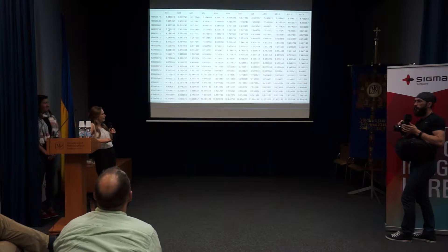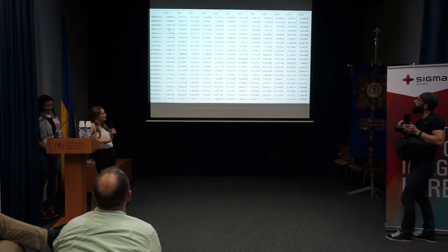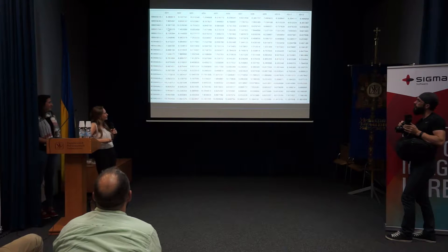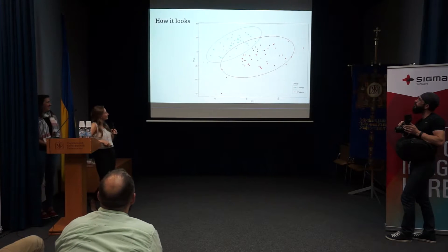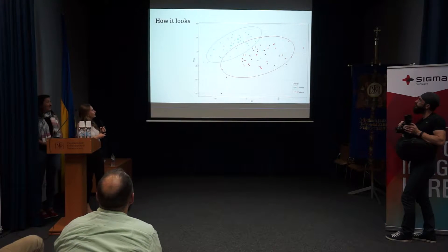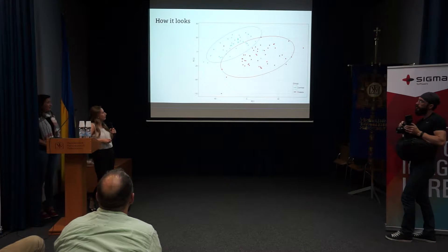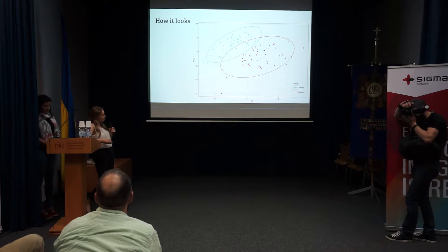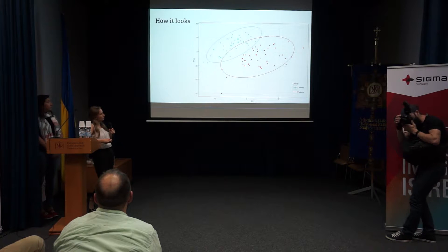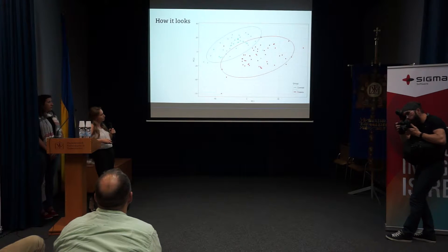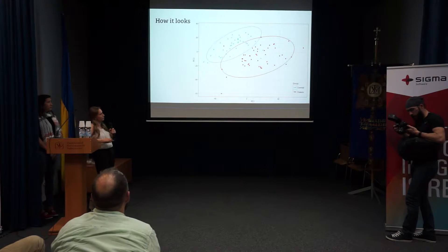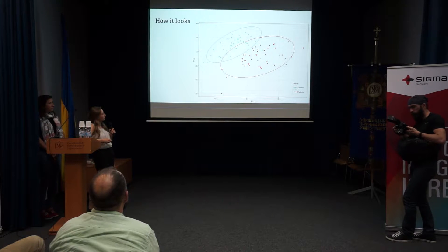This is actually our data — obviously you can't say anything about it from that picture. So we tried to visualize it: we applied PCA, principal component analysis. And from that picture you can see that samples for healthy and ill people are actually separated and they are different.